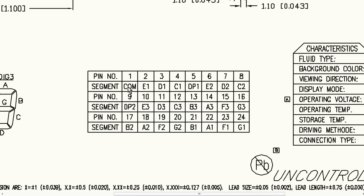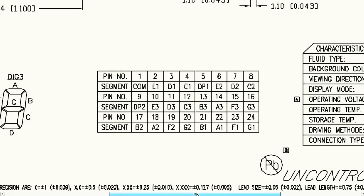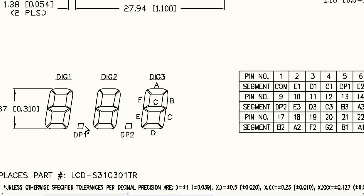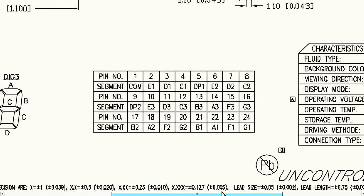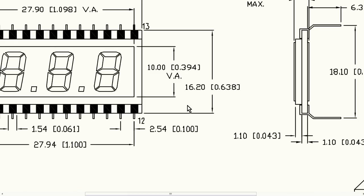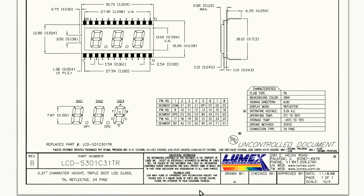Not all LCDs will operate like that — they might have multiple common terminals, and that's important when you go to select your LCD driver chip or microcontroller. The MCU's built-in LCD module has to support not only the number of segments but also the number of commons. So if we're happy with this LCD, we'd search for a microcontroller with LCD capability supporting at least one common terminal and up to 23 segments, though maybe we could drop one if we don't need all the decimal points.